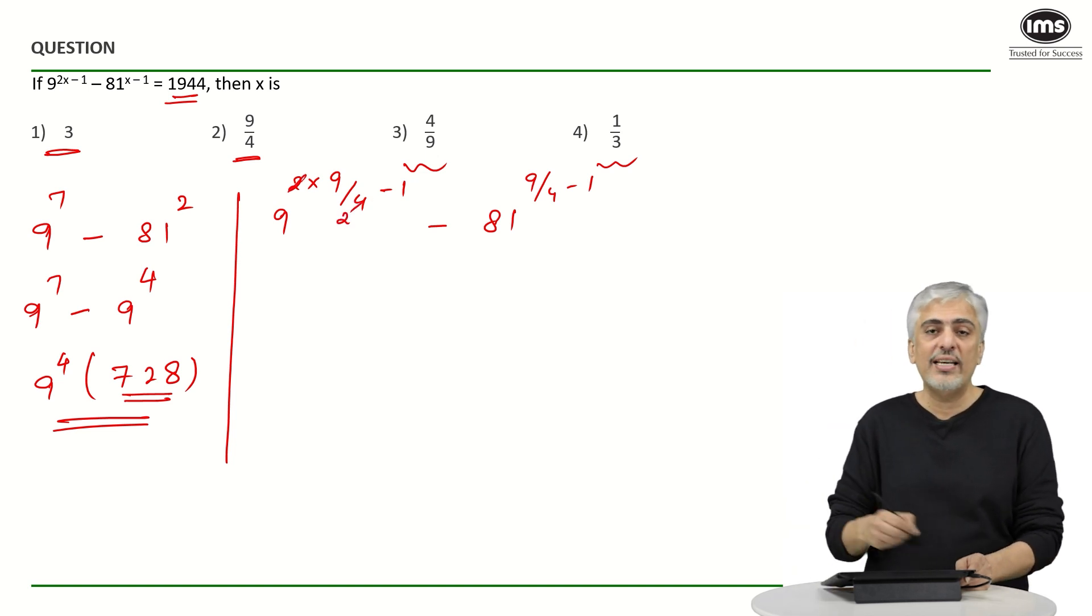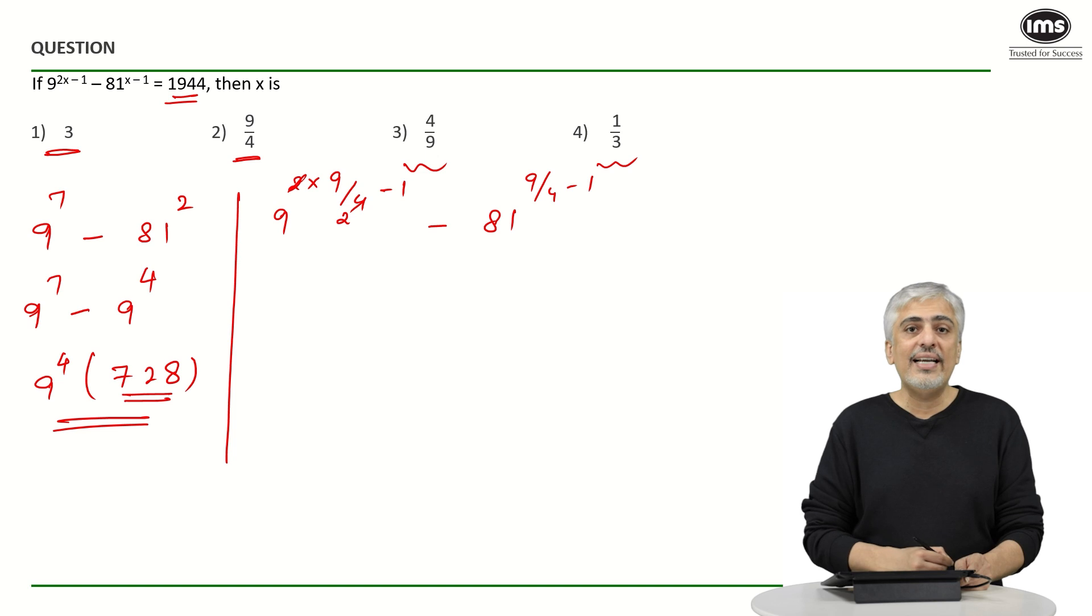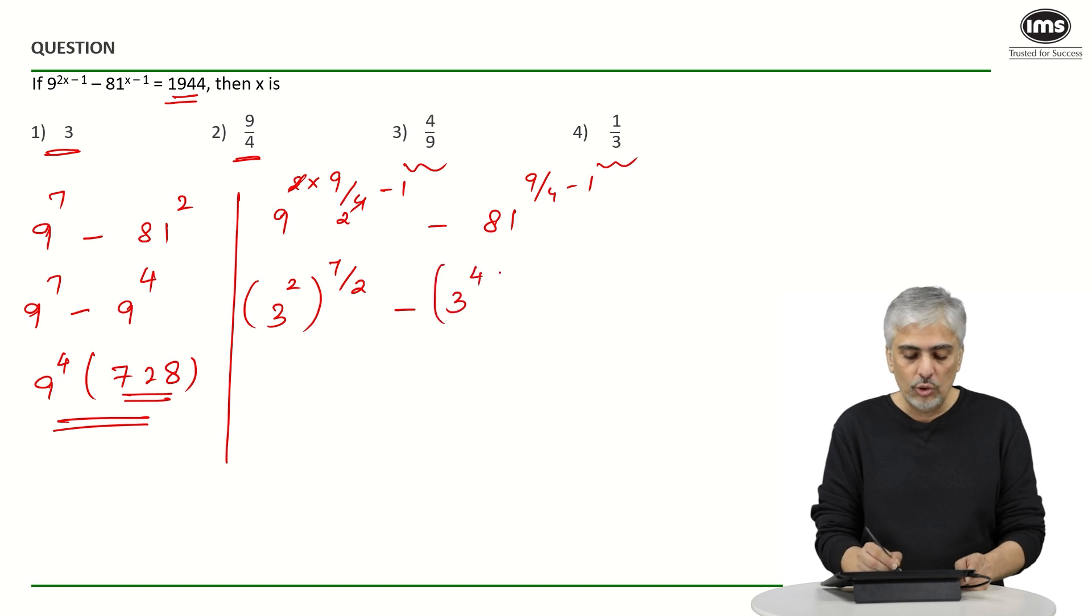Write 9 as 3 square. So 3 square raised to 7 by 2. Write 81 as 3 raised to 4. 9 by 4 minus 1 is 5 by 4.